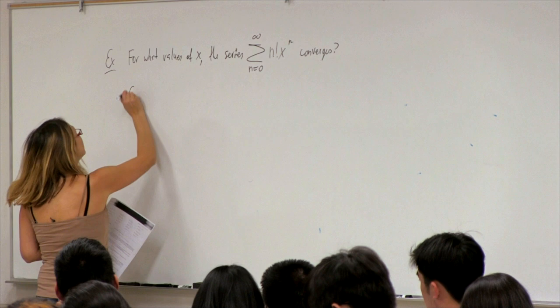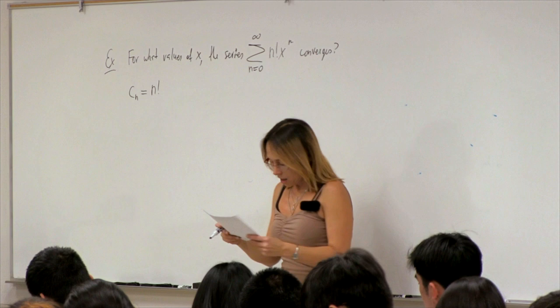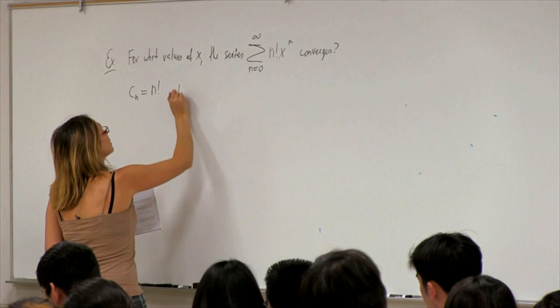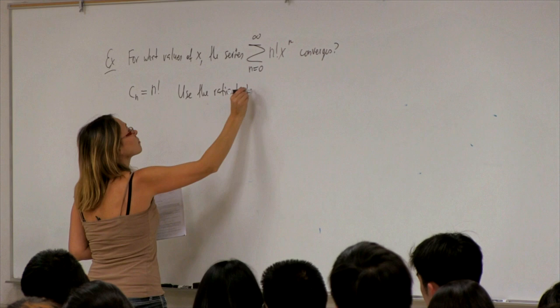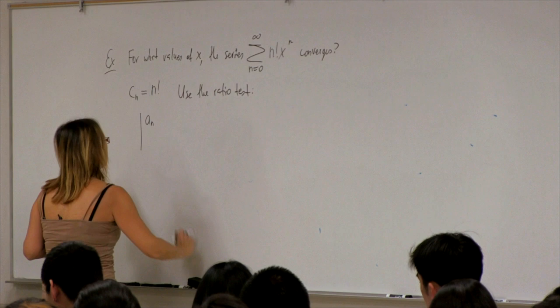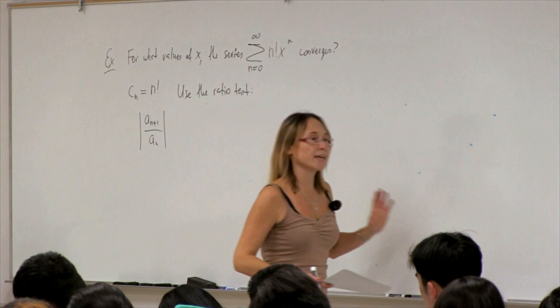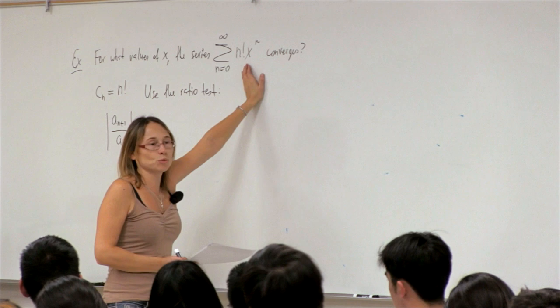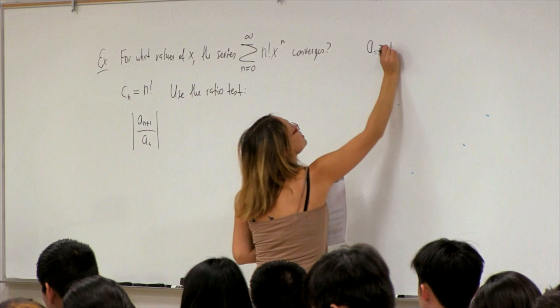The coefficients cn are given by n factorial, so they're all different. Because this contains a factorial, we'll use the ratio test. We look at |aₙ₊₁/aₙ|. We momentarily treat x as a fixed constant and investigate convergence. In this case, aₙ is simply n factorial times x to the n.